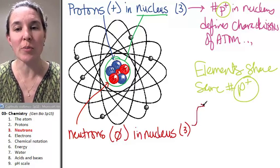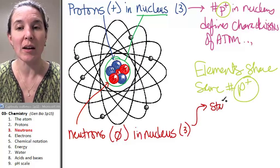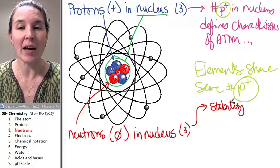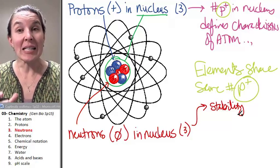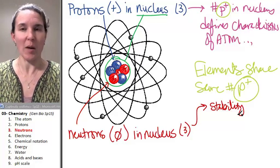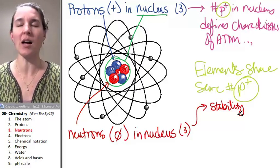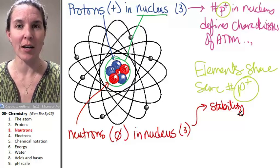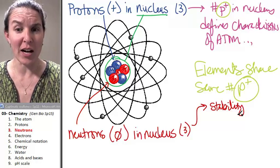There's three neutrons in this particular atom. Neutrons contribute to the stability of an atom. So an unstable atom will literally fly apart, and a ton of research is done on unstable atoms. They're actually really interesting.